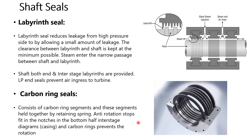In multi-casing turbines, carbon seal ring segments are provided. These seal segments are held together by a spring and there are anti-rotation stops provided, which are fitted in the bottom half of the inter-stage casing. Carbon rings prevent the rotation of the seal.